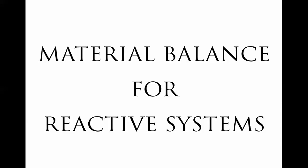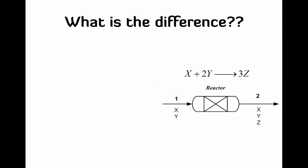Hello everybody. In this video I'm going to continue what we discussed last time about the material balance, and in this case we are doing this for reactive systems. We first want to know what's the difference between a reactive system and a non-reactive system. Let's discuss this case where we have a reactor with two components going in, x and y, and this reaction is taking place: x + 2y → 3z. That's why you have three components in the product.